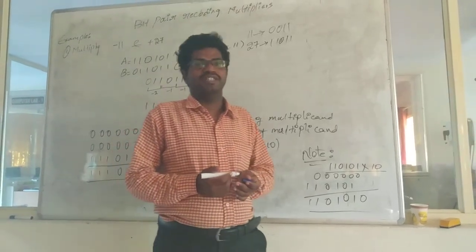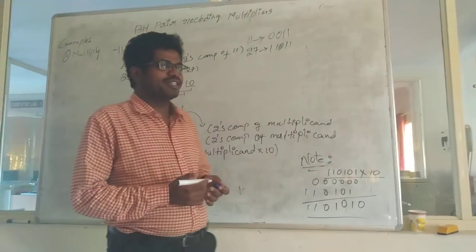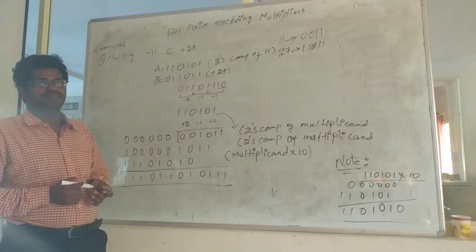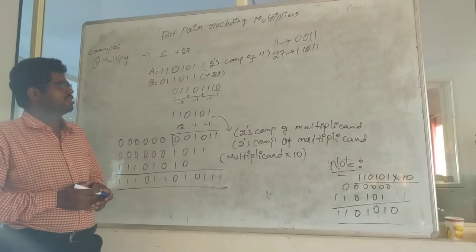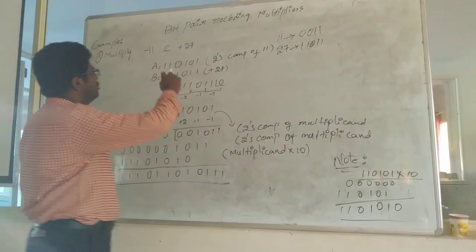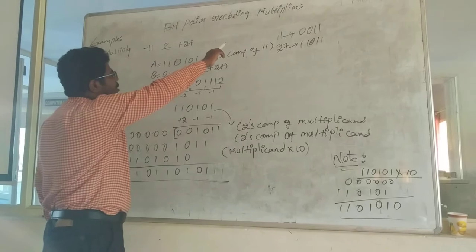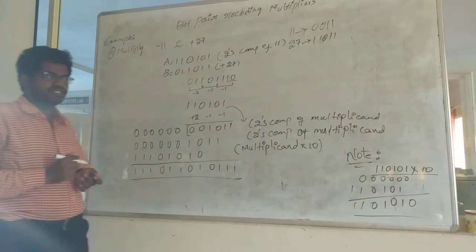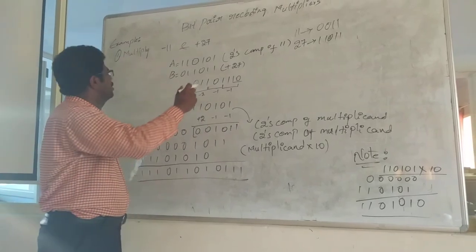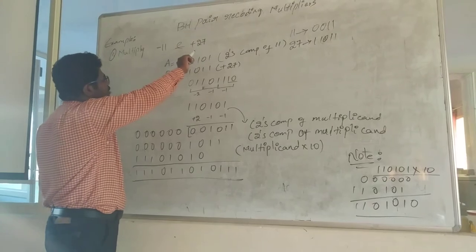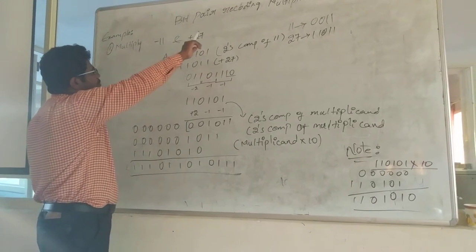Hi, welcome back to Postbox CH channel. Back to computer organization topics and other topics coming for digital electronics and computer architecture, as well as the gate exam. Continuing the topic called bit pair recoding of multipliers, the previous example I told you was minus 13 into minus 6. Today we are going to solve the other problem: multiplier minus 11 into 27, plus positive 27.